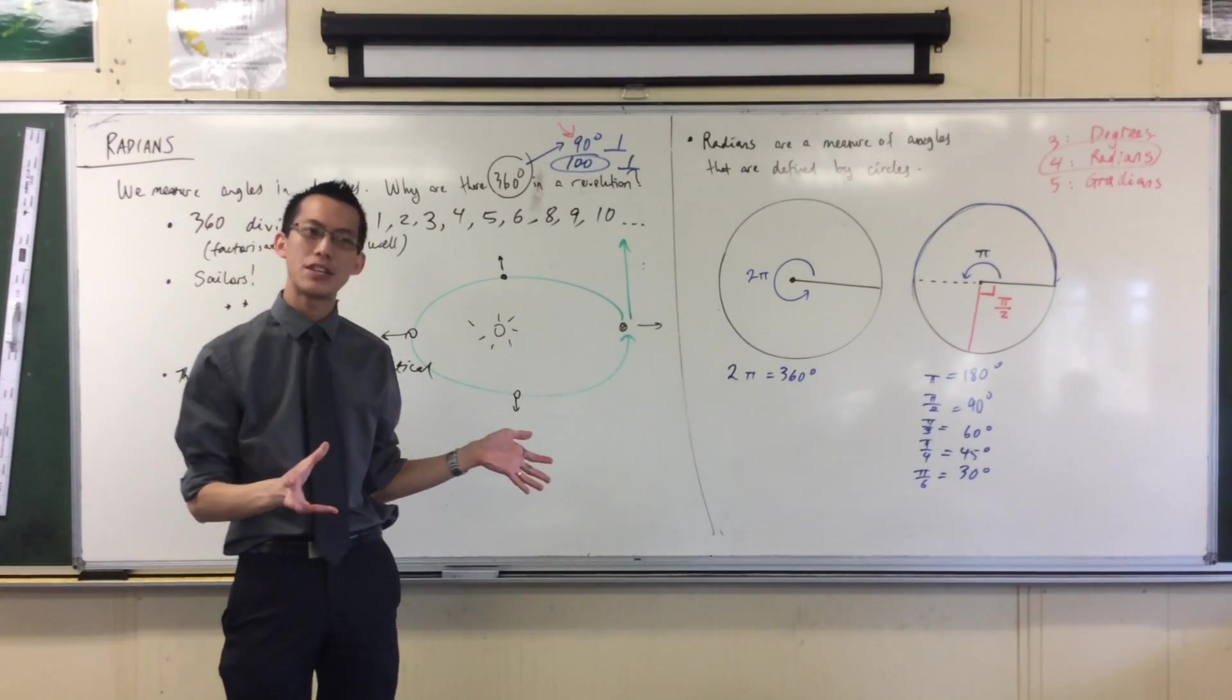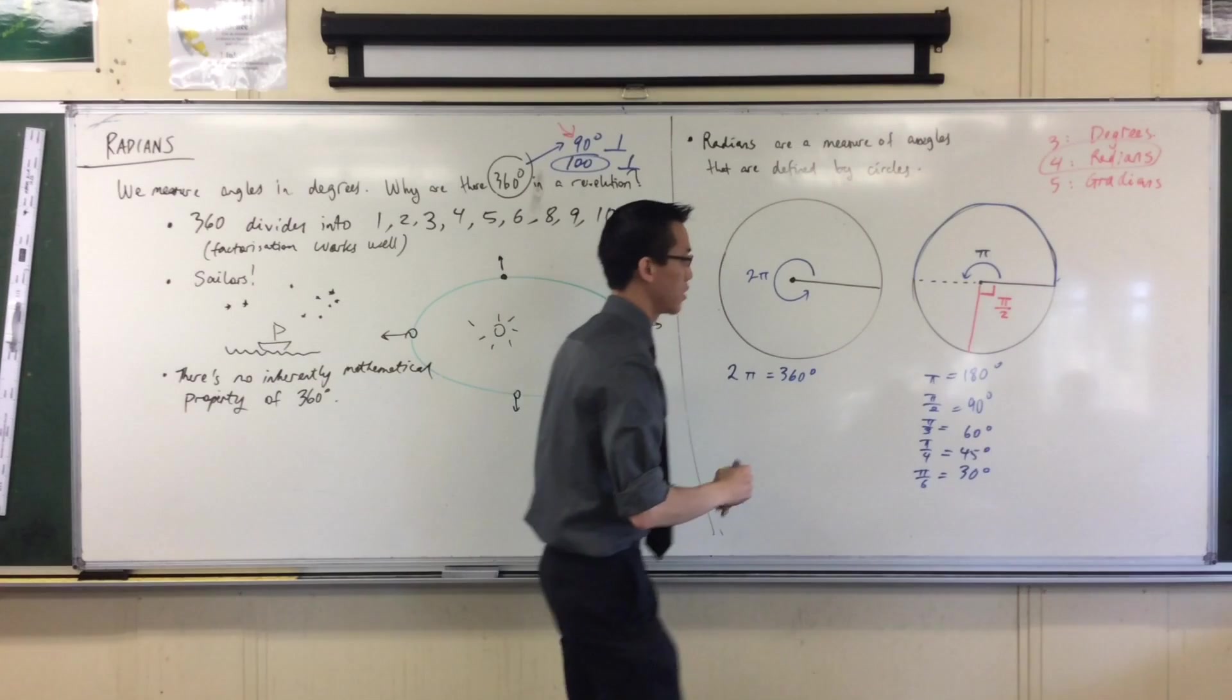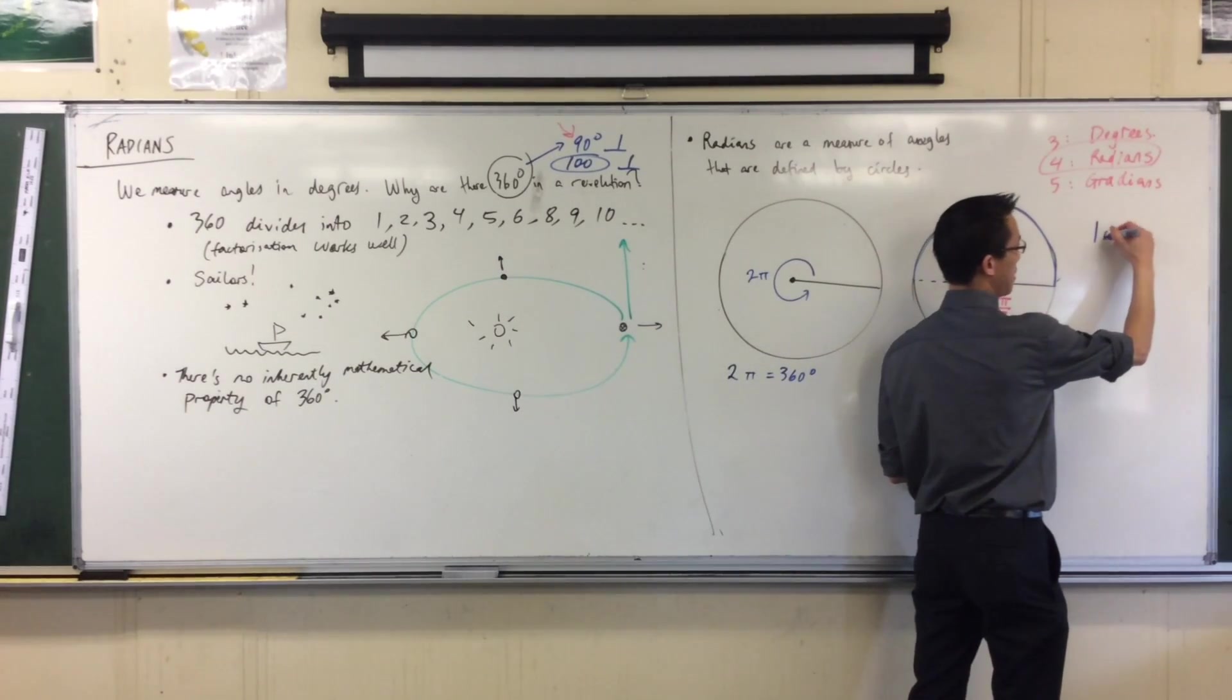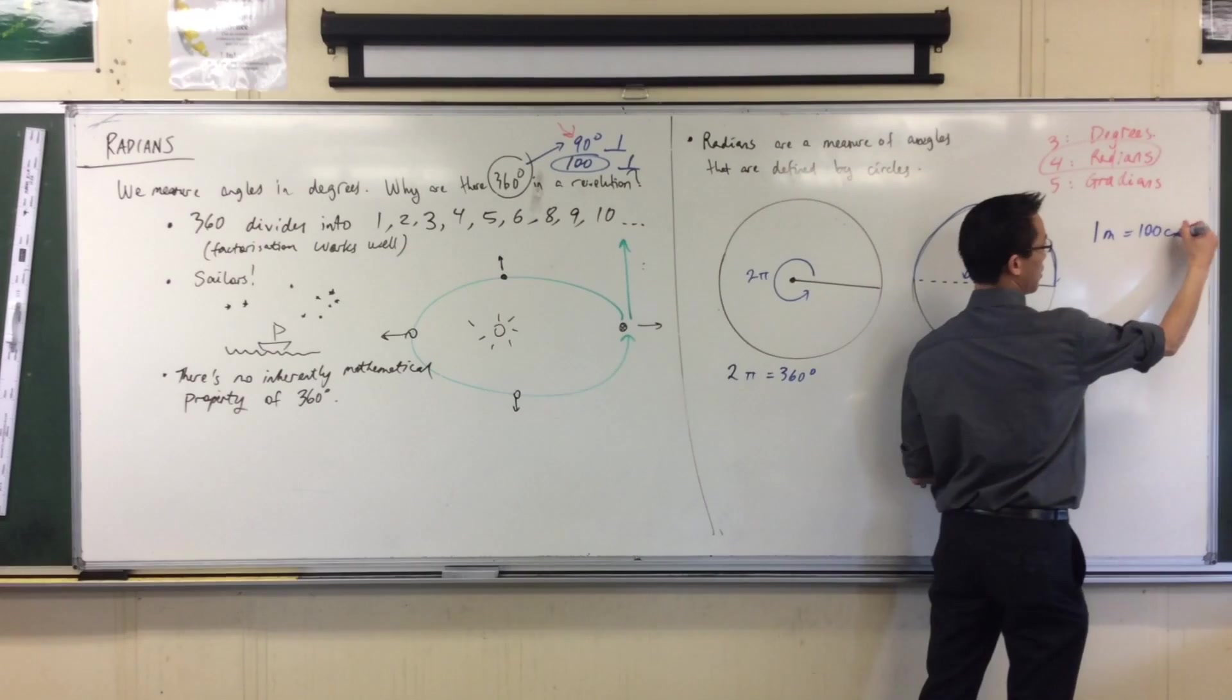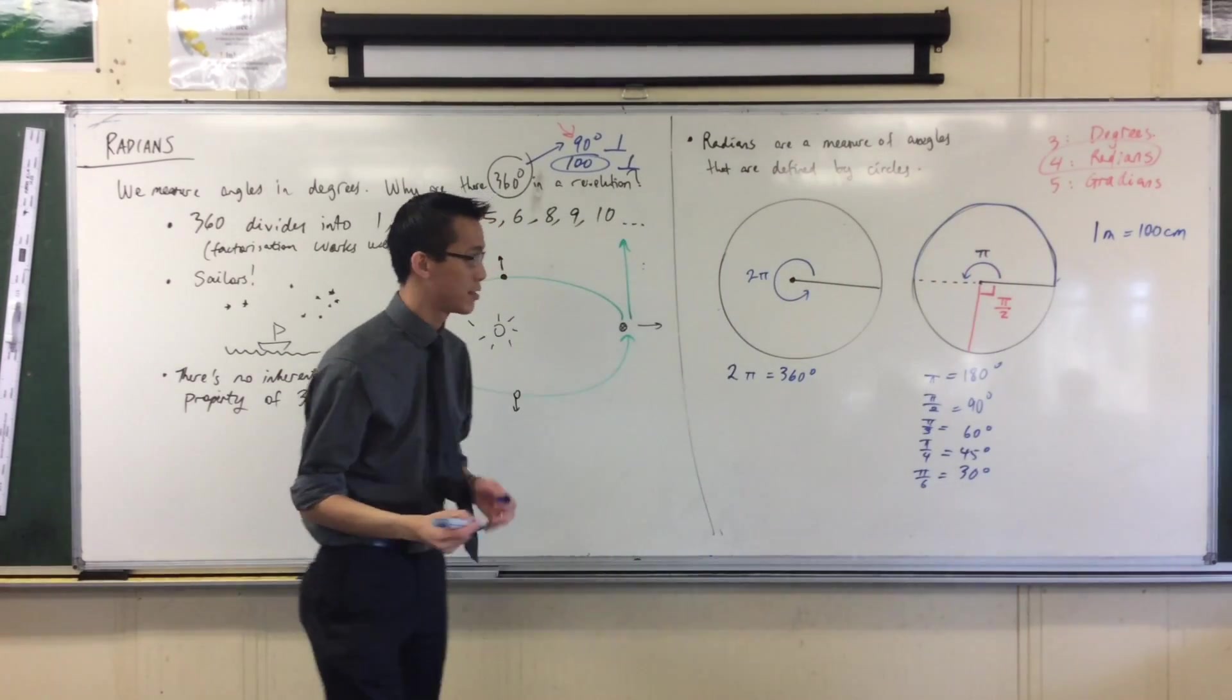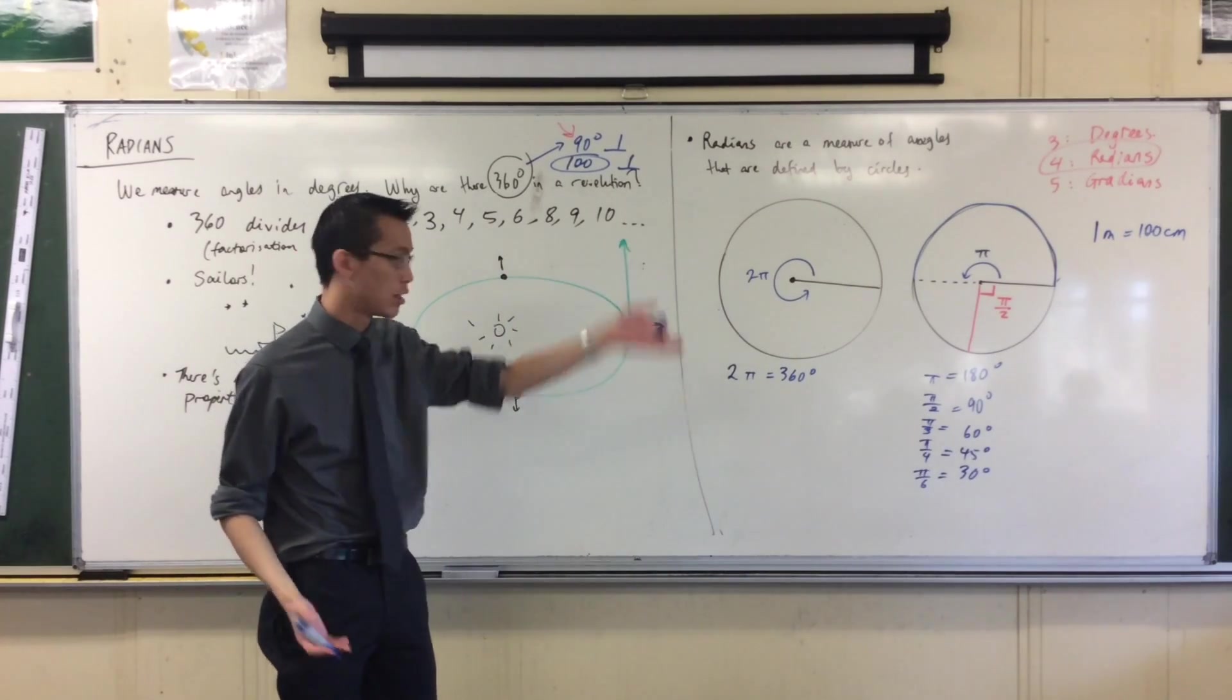I have not written any symbols for radians. Which you would think is a good idea because when you convert between units, for instance, if I said 1 meter is 100 centimeters, you kind of need units on both sides. Because if you said 1 equals 100 centimeters, you'd say 1 what? You need the unit.